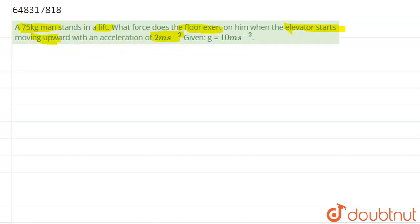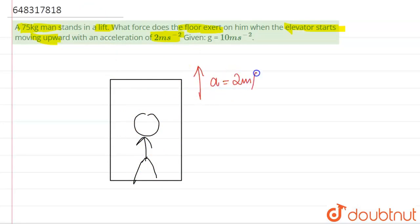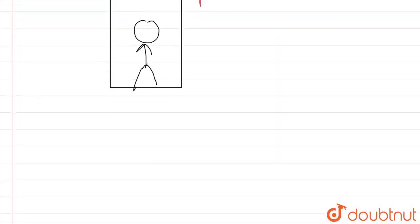So in this question, what we are being told is that there is an elevator. Let's suppose this is the elevator and inside this there is a man. Let's suppose this is a man. So how much force does he exert on the floor when the elevator is moving up with the acceleration of 2 meter per second square?